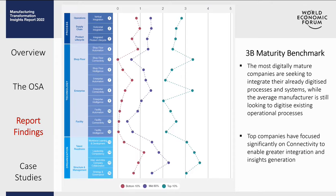One interesting discovery is that if you look at the top 10 percent compared to the others, for all the connectivity dimensions — numbers five, eight, and eleven — the distance between the average and the top is much more pronounced than in other dimensions. This gives us a sense that really the top companies are focusing significantly on connectivity, whether on the shop floor, enterprise level, or facility level, to enable greater integration. So if you have aspirations to be best-in-class, connectivity would be something you might want to double your focus on.